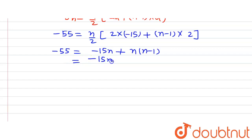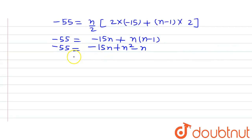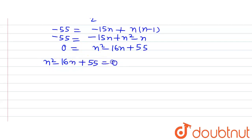On solving, we get minus 15n plus n squared minus n equals minus 55. Solving further, we get n squared minus 16n, and minus 55 moves to the right-hand side giving plus 55 equals 0. This gives us the quadratic equation n squared minus 16n plus 55 equals 0.